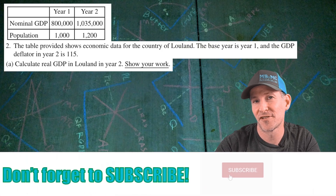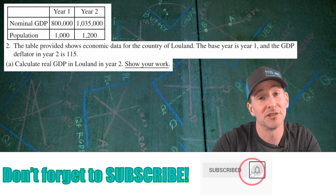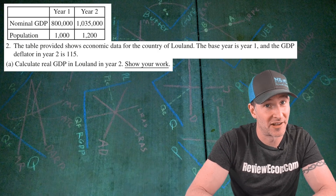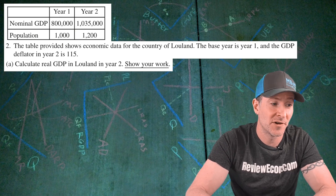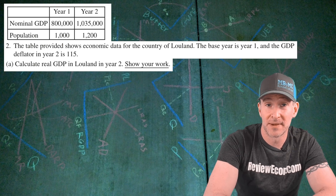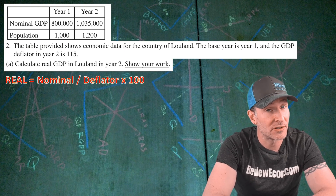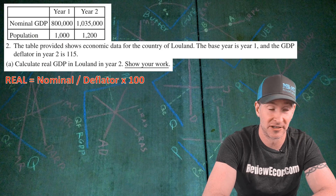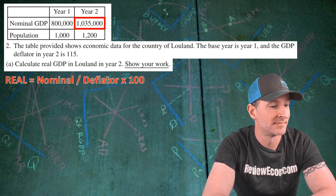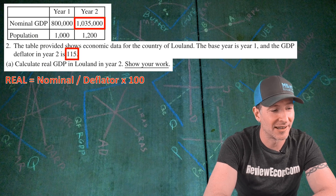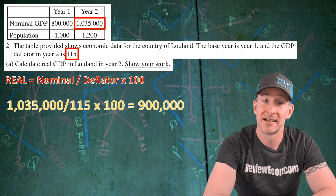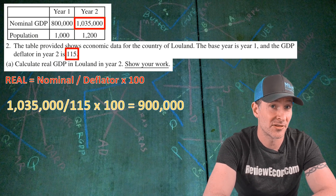This question starts off with a table showing economic data from Luland. We're told the base year is year one and the GDP deflator in year two is 115. We have to calculate the real GDP in Luland for year two and show our work. Remember, real GDP is nominal GDP divided by the deflator times 100. Our nominal GDP for year two is 1,035,000 and our GDP deflator is 115. Plugging in those numbers: 1,035,000 divided by 115 times 100 equals 900,000 of real GDP.